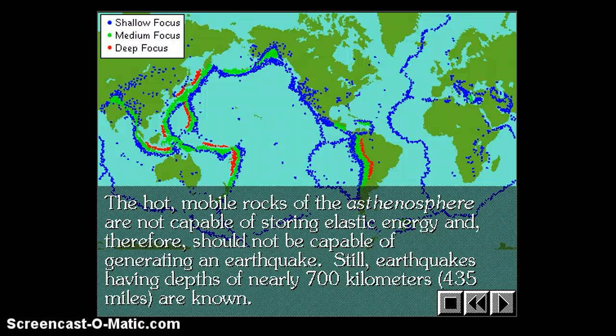The hot, mobile rocks of the asthenosphere are not capable of storing elastic energy and should not be capable of generating an earthquake. We know that the crust under the ocean, the lithosphere, is 10 to 100 kilometers thick. Under most continental masses, it's between 100 and maybe a couple hundred kilometers thick, and in the thickest places a little over 250 kilometers thick. Underneath 250 kilometers, we're into the asthenosphere. Yet, in these few unusual places traced in red on these diagrams, we actually get earthquakes that are 700 kilometers deep, definitely into the asthenosphere.